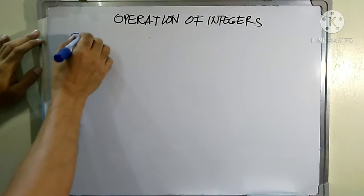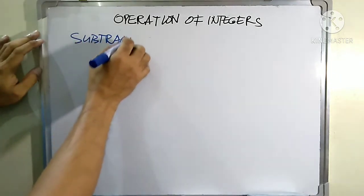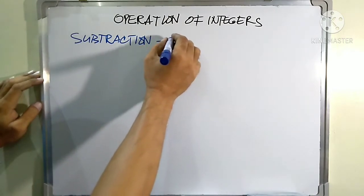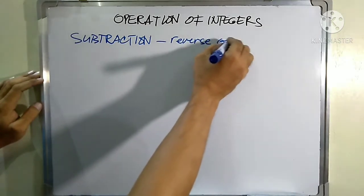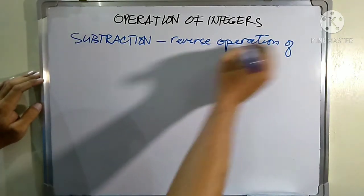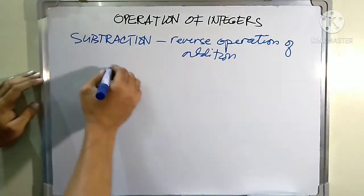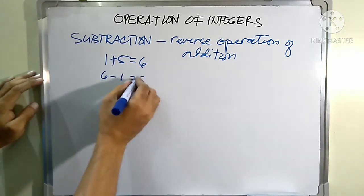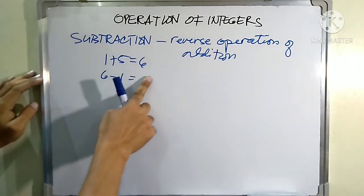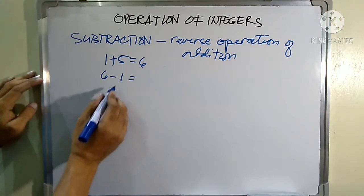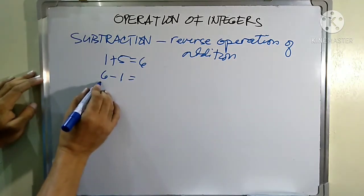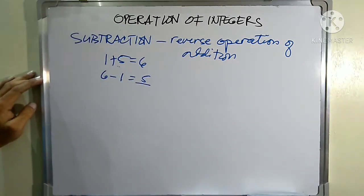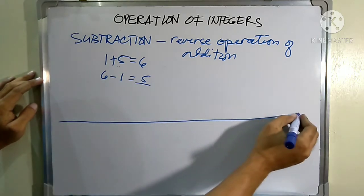Let's talk about subtraction, our second operation of integers. In elementary you have learned that subtraction is the reverse operation of addition. For example, you have learned one plus five equals six, and in subtraction you have six minus one equals five. But before you learn to get the difference, your teacher taught you how to get it by saying: what number must be added to one in order to get six?